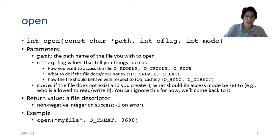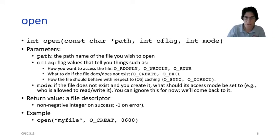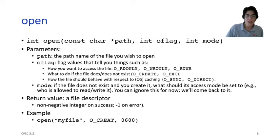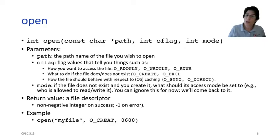Let's look at those system calls in a little more detail. Open takes a path name — it's a constant, because you don't need to change that path name. It takes some flags that describe the modes in which you want to open it, and then a mode argument that only kicks in if you're creating the file. These flags can tell you lots of things — like whether you're opening read-only, write-only, or read-write. They also tell you what to do if the file doesn't exist.